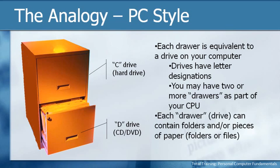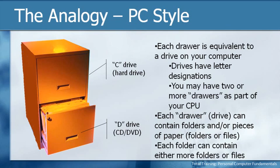When we have a drive — or in this case, the analogy of a drawer — each drawer or drive can contain only two different things. It can either contain folders or pieces of paper in the real world, and on the computer it can contain folders or files. That's important to remember. If we keep it simple — remember the KISS principle, keep it simple sweetie — we only have to worry about two things: does my drive contain folders and/or files?